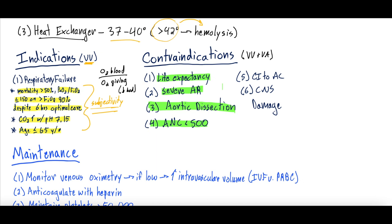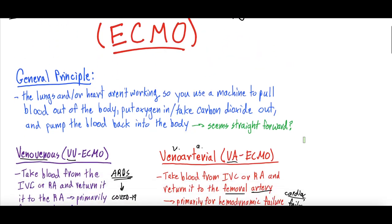Other contraindications: an ANC (absolute neutrophil count) less than 500 — placing foreign cannulas in an immunocompromised patient creates very high infection risk. A contraindication to anticoagulation is also a contraindication to ECMO: patients must be anticoagulated to prevent clotting, so if they have a significant GI bleed, brain bleed, or similar, the required anticoagulation will worsen that bleeding. Finally, severe central nervous system damage or brain damage is another contraindication.